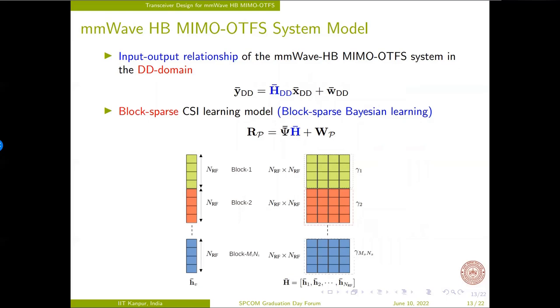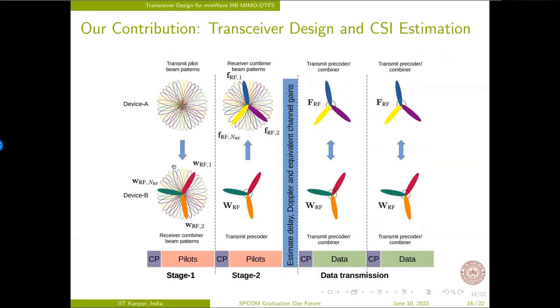Furthermore, the resultant CSI learning problem is also formulated as this. Interestingly, here the CSI matrix H bar, owing to the multiple RF chains, becomes block sparse in nature, which can be efficiently learned via block sparse Bayesian learning. The overall design procedure for the MMWave HB MIMO OTFS system is shown here in this slide.